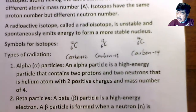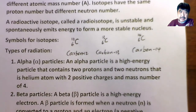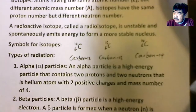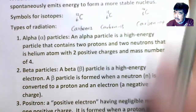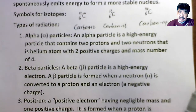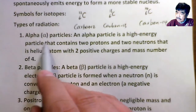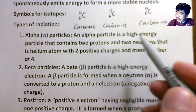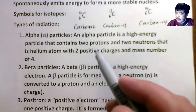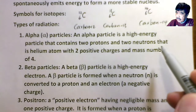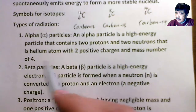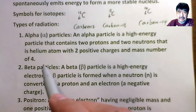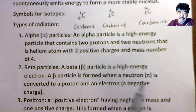Let's take a look at radiation — the types of nuclear radiation. We introduce four types. The first one is called the alpha particle. Alpha particle is a high-energy particle that contains two protons and two neutrons. Actually, this is a helium with a two-positive charge and a mass number of four.